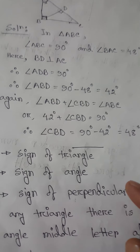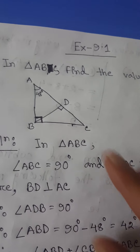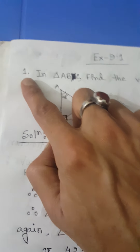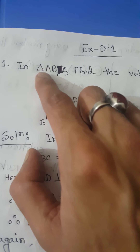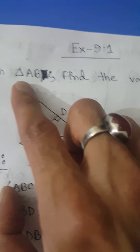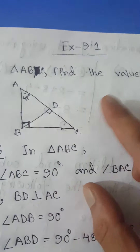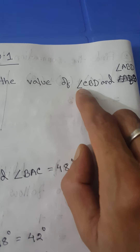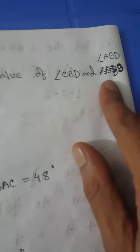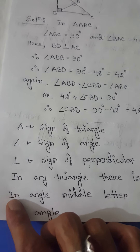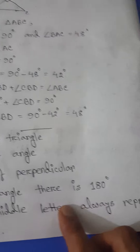The last basic: in the angle sign, the middle letter always represents the angle. We will learn it later. First we solve question number one. The question is: in triangle ABC, we have to find the value of angle CBD and angle ABD.